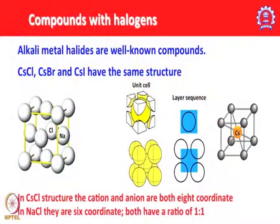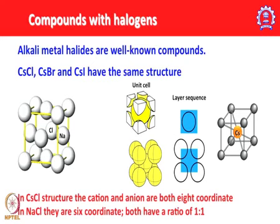Alkali metals react with almost all halogens to give the corresponding halides. Alkali metal halides are well-known compounds — sodium chloride, potassium chloride, and all combinations. Cesium chloride, cesium bromide, and cesium iodide have the same structure, while sodium chloride has a different structure. In the cesium chloride structure, both the cation and anion are 8-coordinate, whereas in NaCl, both sodium and chlorine are octahedrally (6-coordinate) arranged with a 1:1 ratio.